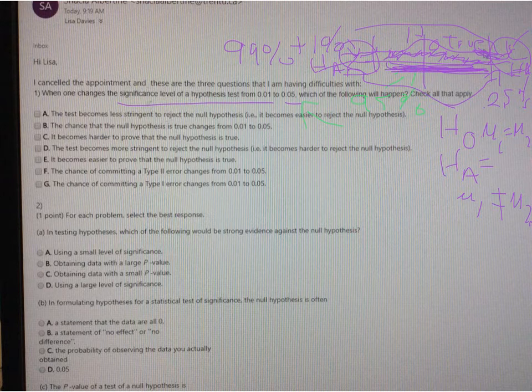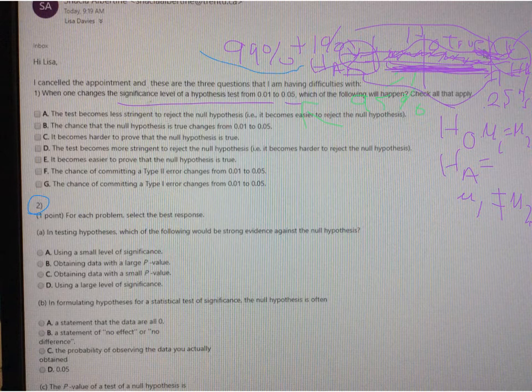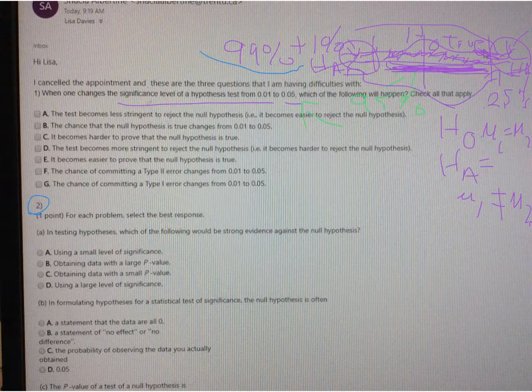For the second question, for this number two question here, it's along the same lines, and you need to understand what these four things are that they're describing. A small level of significance and a large level of significance is referring back to these 99% and 95% numbers, and those are not necessarily going to be evidence against the null hypothesis.